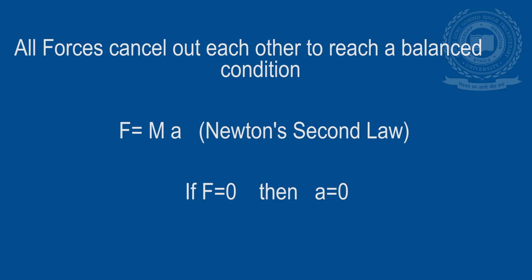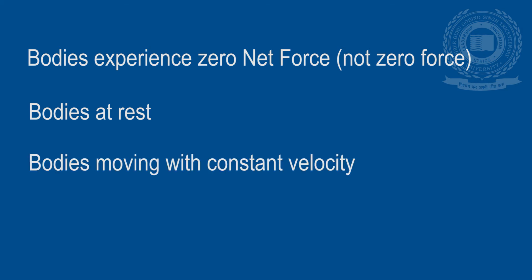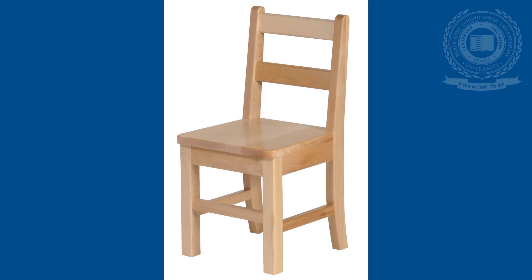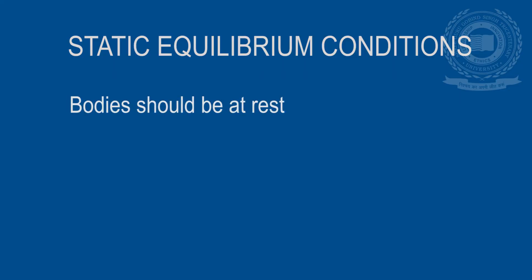If F is 0, then A is also 0, as mass can never be 0. So in statics, we generally study about those bodies that experience zero net force, and not necessarily zero force. This constitutes bodies at rest and bodies moving with constant velocity. In statics, we generally come across bodies that are at rest because they are designed not to move, like a building, a chair, a column, a bridge, etc. All these bodies are in a state of static equilibrium.